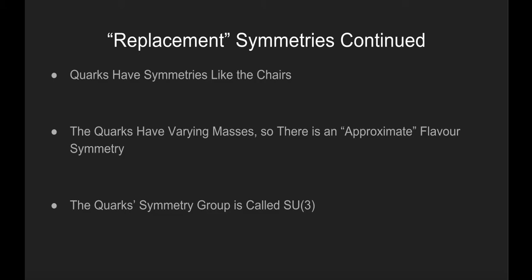Using the chair analogy, we would only be able to put the chairs in a few specific configurations in order to keep the final arrangement indistinguishable. Remember that groups can have names. The quark symmetry group is called SU3, which is very similar to the symmetry group of three chairs.